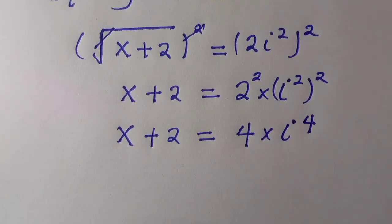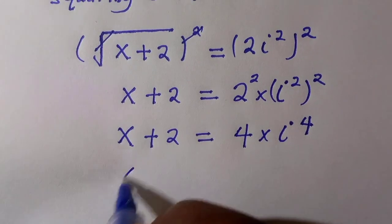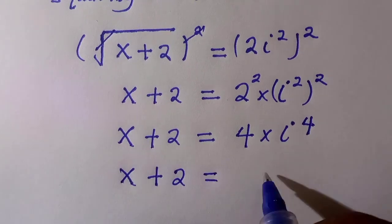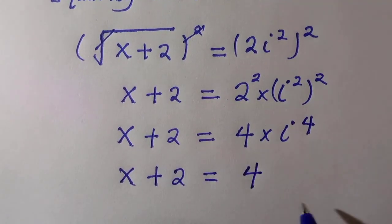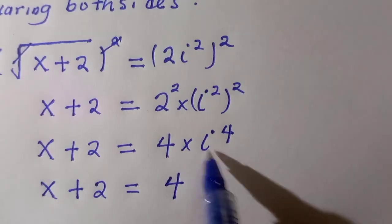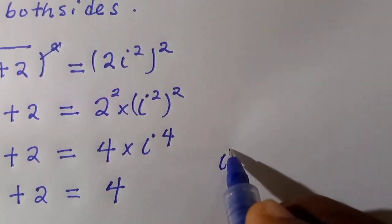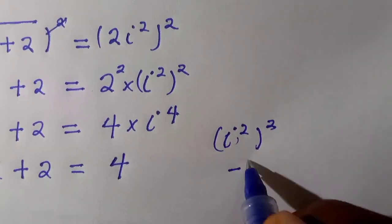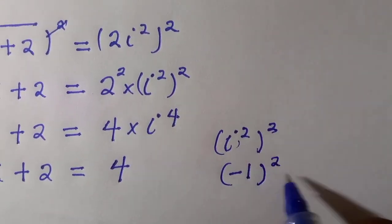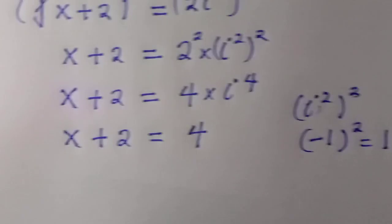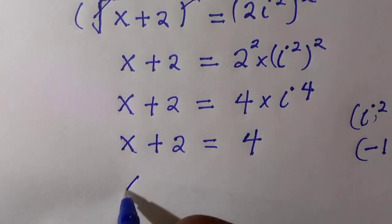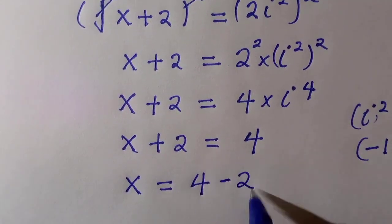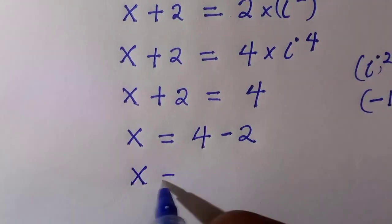x plus 2 equals 4 multiplied by i to the power of 4. To get the value of x, we consider i to the power of 4, which equals i squared raised to the power of 2. Since i squared is minus 1 raised to power 2, which is positive 1, we have x plus 2 equals 4. Therefore, x equals 2.